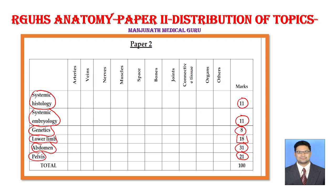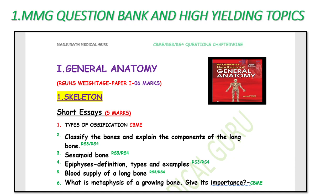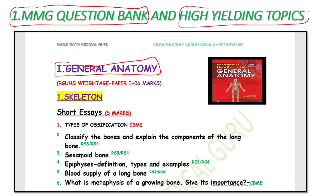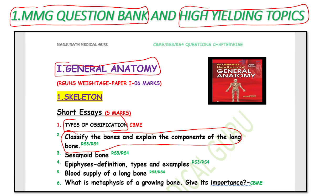According to the distribution of marks in paper 2, you need to prepare selective chapters. The first important study tip is you must know the important topics in each chapter. For general anatomy, you can refer to the question bank and high-yielding topics in the app — for example, types of ossification, classified bones, components of long bones, sesamoid bone, epiphysis, blood supply of long bone, and the importance of metaphysis of growing bone.